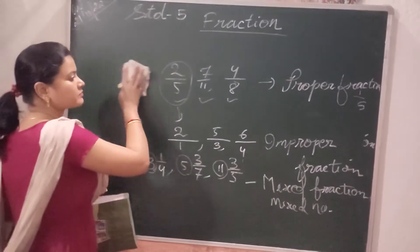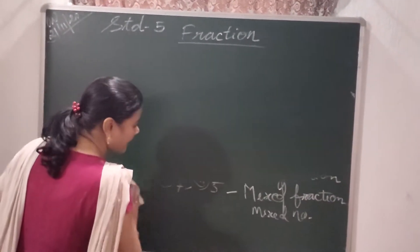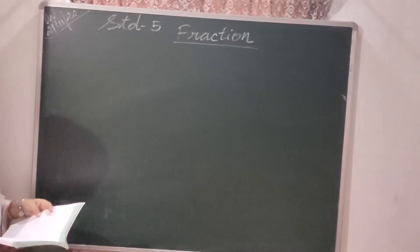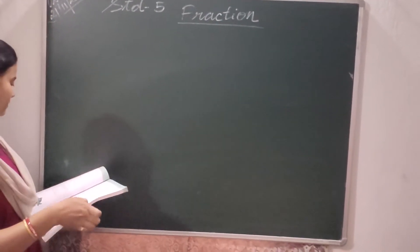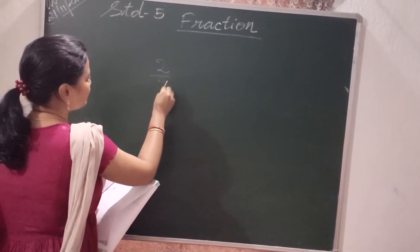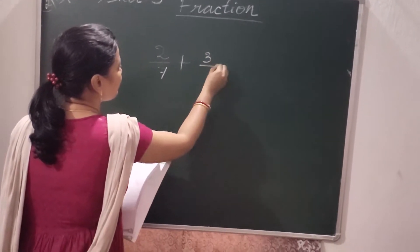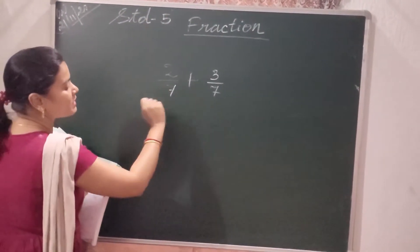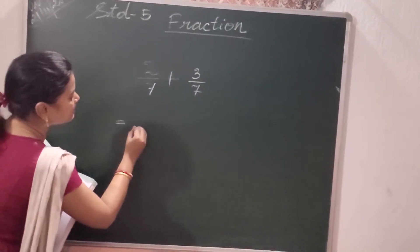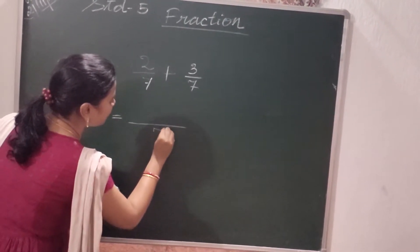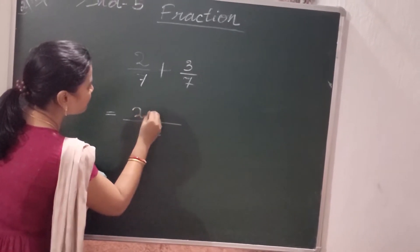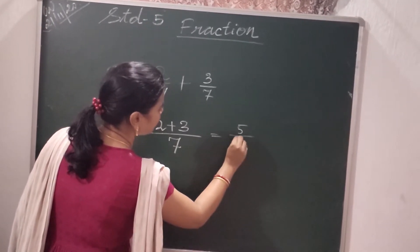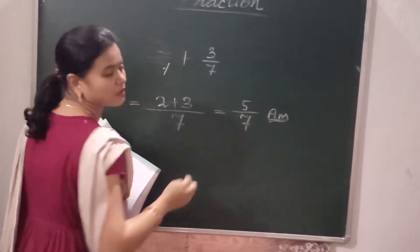That is all about the types of fractions. Next we will do some addition and subtraction of fractions — addition and subtraction of like fractions. First example: 2 by 7 plus 3 by 7. Here the denominators are equal in both fractions, so we keep the denominator as 7 and add the numerators. So it is 5 by 7.